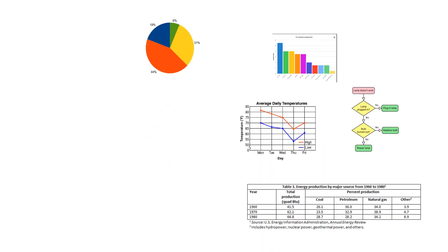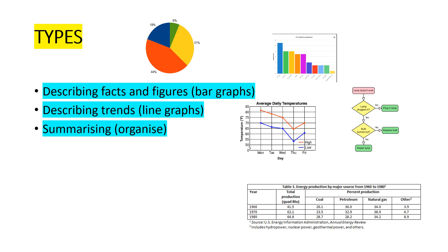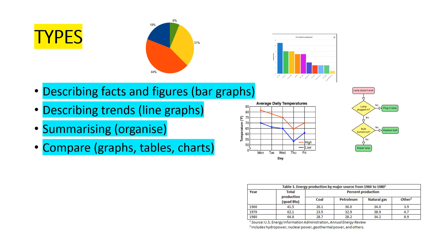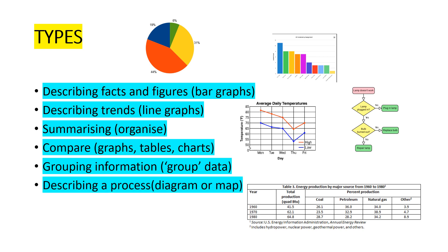These are the types of graphs that we can get. The first one is describing facts and figures, which is mostly represented by bar graphs. The next is describing trends, which is line graphs. Then summarizing, organizing, and comparing graphs, tables, and charts, as well as grouping information and group data. Finally, describing a process, which could be a diagram or a map.